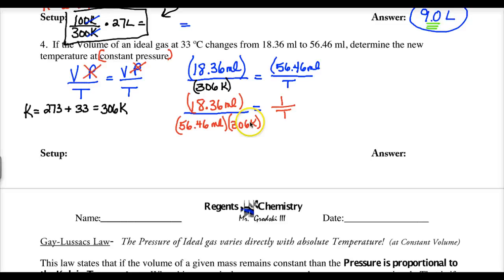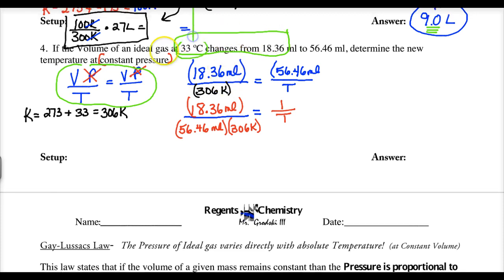Okay. Now, if you look at what I did here, I wrote my formula out. Vice Presence over Teachers of the current equals Vice Presence over Teachers over the future. Notice I crossed out the P because it said constant pressure, and I made sure that my 18.36 went with the 33. That's the current conditions, and I put that on one side. I also changed the Celsius into what? Into Kelvin, 306, because I have to be in a positive absolute scale. And then I put the new volume up top, and we're solving for T.